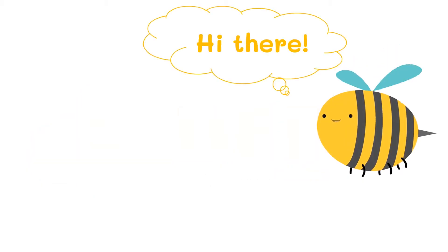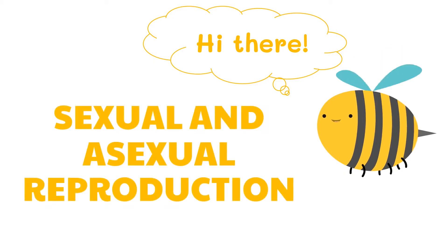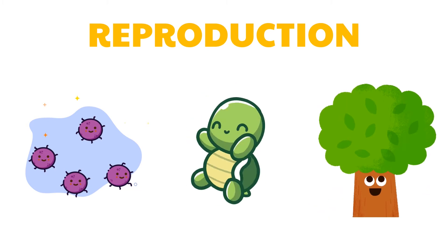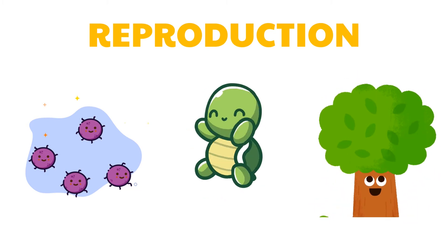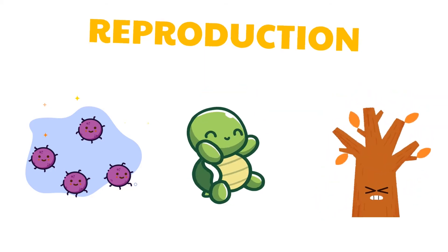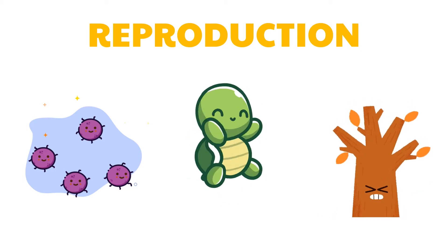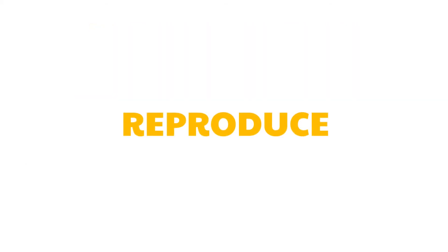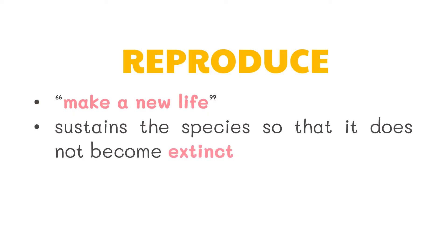In this video we will be talking about the two types of reproduction in all living organisms: sexual and asexual reproduction. While some bacteria live for a few minutes, some animals for half a century, and some plants and trees for hundreds or thousands of years, all organisms do not live forever. Without the process of reproduction, life would come to an end. It is one of the most important and fundamental processes of living organisms. Organisms reproduce in order to survive — to reproduce means to make a new life. Reproduction sustains the species so that it does not become extinct.